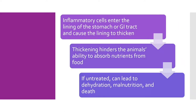The chain of occurrences that happens in IBD — after the cause, which I'll look at here in a little bit — the inflammatory cells will enter the lining of the stomach or GI tract, and this will cause the GI tract to thicken. The thickening hinders the animal's ability to absorb nutrients from the food, and if this goes untreated, it can lead to dehydration, malnutrition, and eventually death.